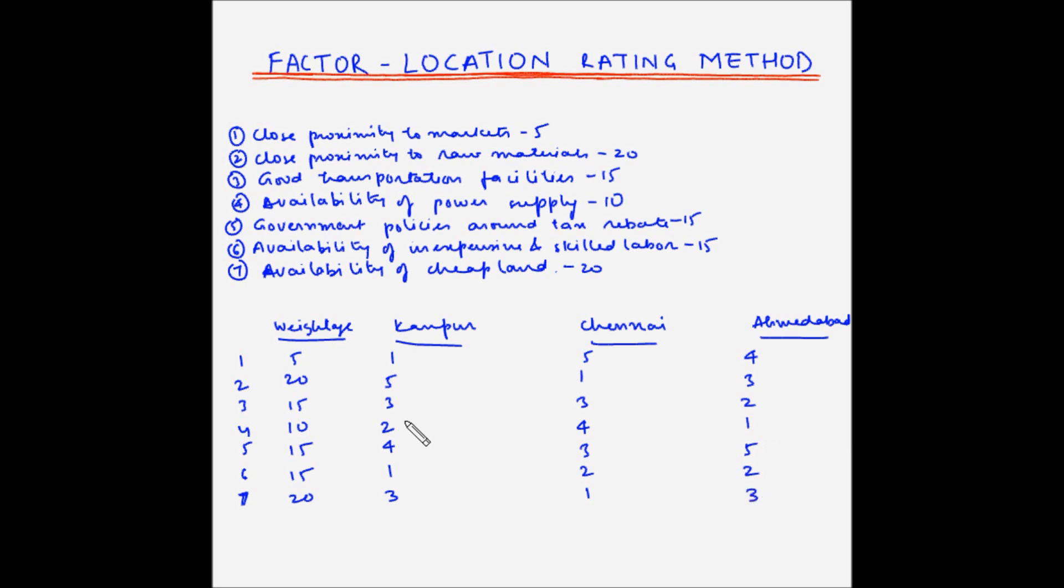Now we have to find out the product of the weightage and the location ratings for each of the locations. So for Kanpur: 5 times 1 is 5, 20 times 5 is 100, 15 times 3 is 45, 10 times 2 is 20, 15 times 4 is 60, 15 times 1 is 15, and 20 times 3 is 60.